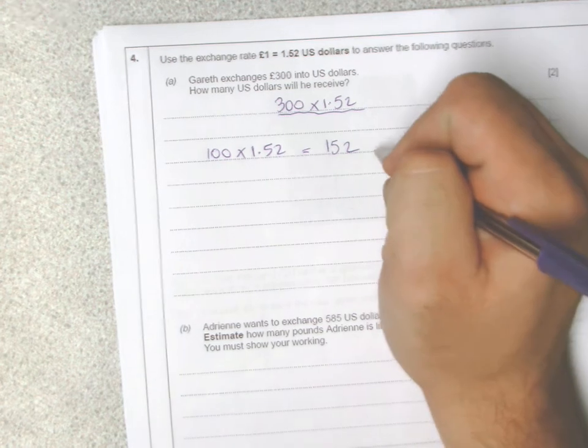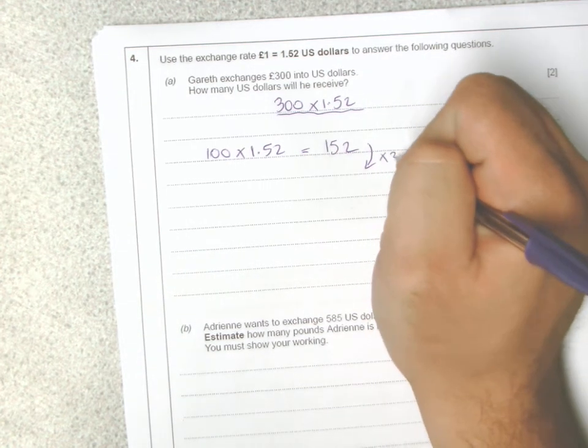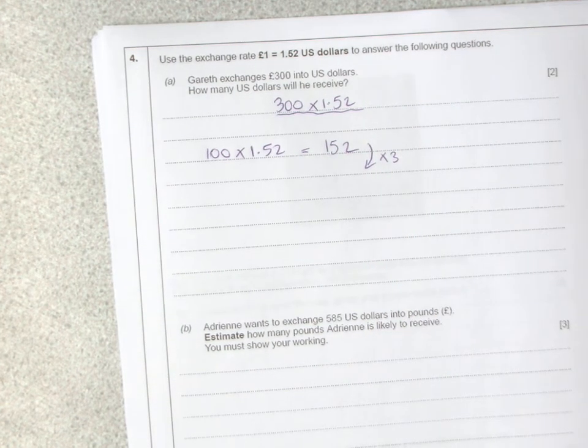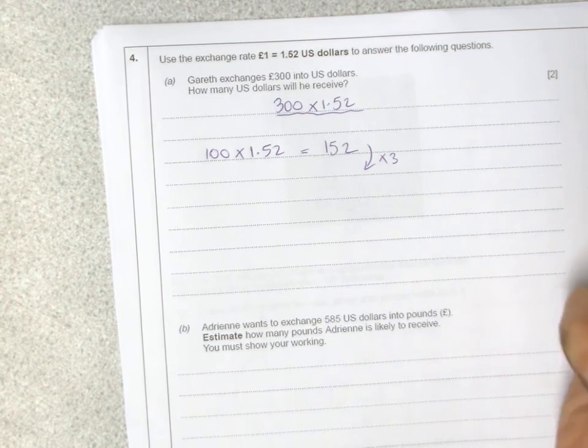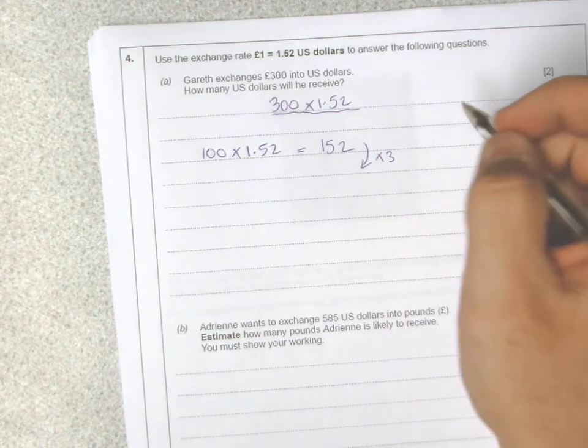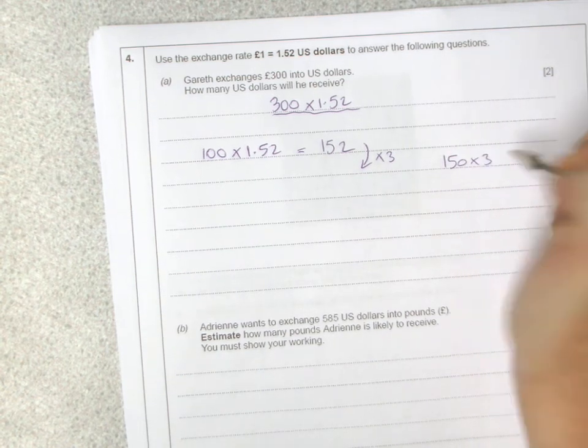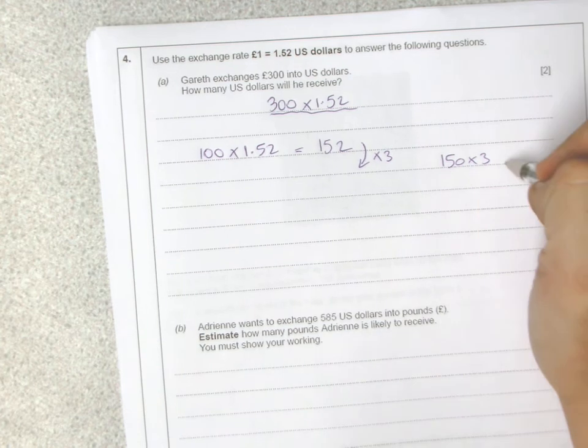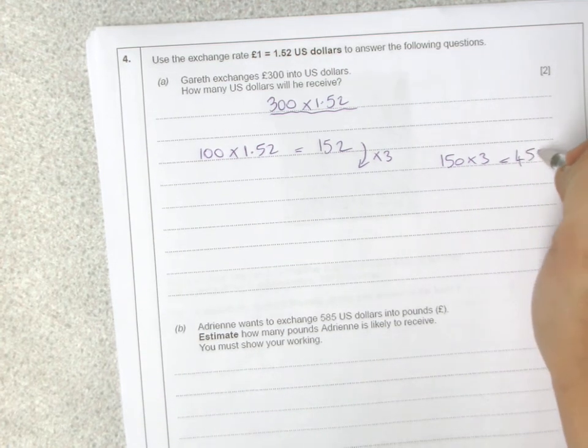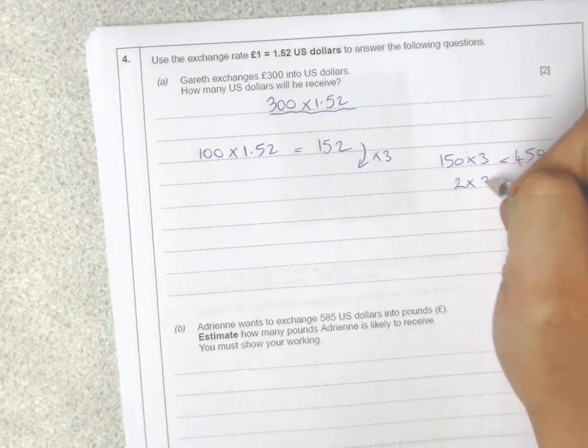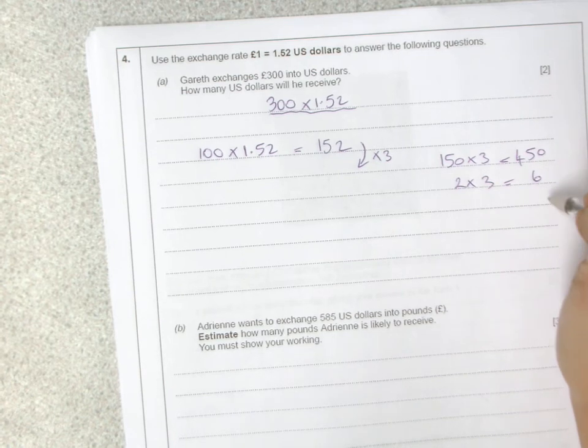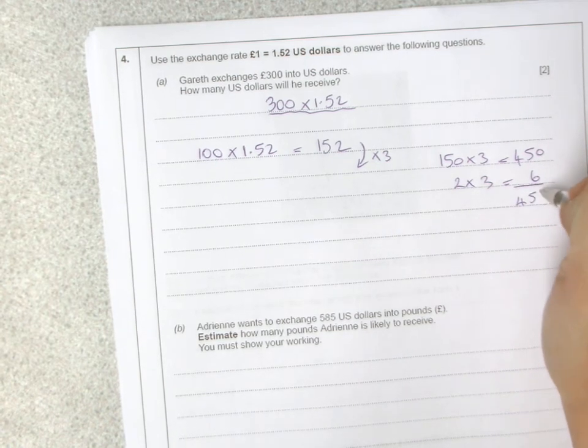That's 100 times 1.52. Of course, we want 300 times 1.52, so all we need to do is multiply this by 3. You could think of 150 times 3, which is 450, and then 2 times 3, which is 6, so you end up with 456 US dollars.